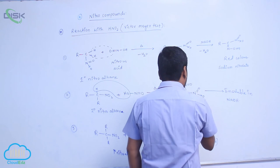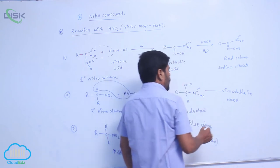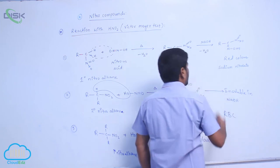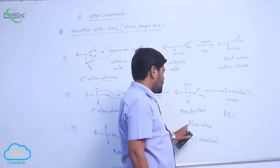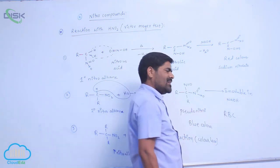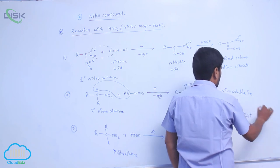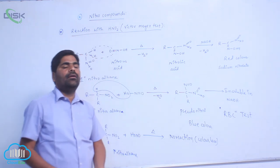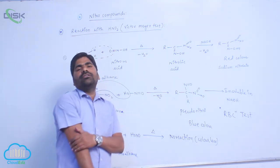So the results are red, blue, and colorless — which is why this is known as the RBC test. Primary (1°) nitroalkane gives a red color, secondary (2°) gives a blue color, and tertiary (3°) gives a colorless result. Based on this precipitate color, 1°, 2°, and 3° nitroalkanes are distinguished.